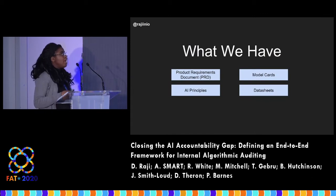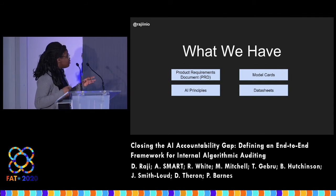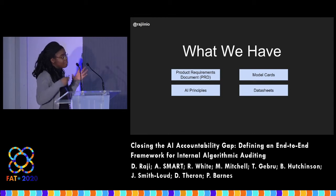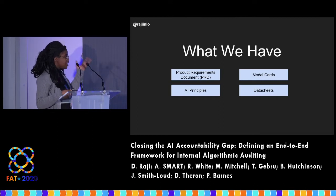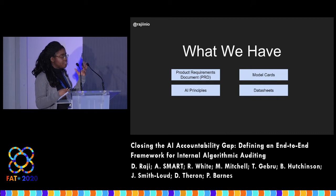We currently have a set of tools to help us reason and think about this. Some things developed from the FAccT community propose certain documentation to support the translation of principles to practice — something we label the Algorithmic Accountability Gap. We have product requirement documents, proposals for model cards to document model performance and declare intended use, and data sheets to systematically characterize the nature of the data.